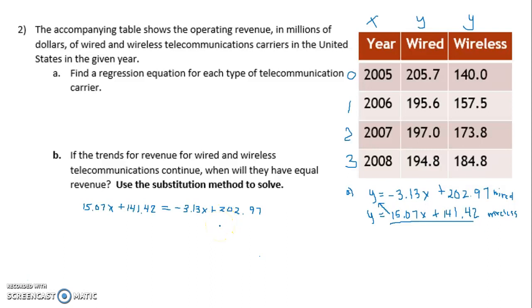And so the first thing I did was I subtracted this 141 number from both sides. On this side, these cancelled out, and so I was left with 15.07x equals negative 3.13x plus 60.55. Then I added this 3.13x to both sides. These guys cancelled.